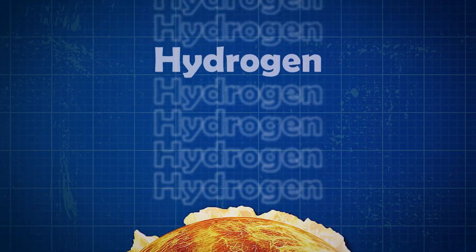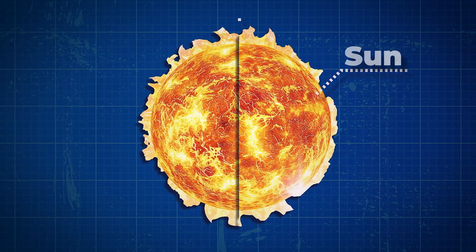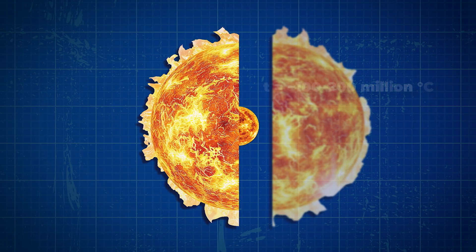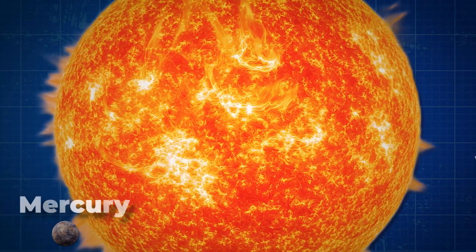When the hydrogen in the core runs out, the sun will begin to change. Its core will shrink. Its temperature will rise. The outer shell will swell. The sun will become a red giant.